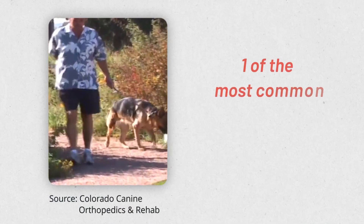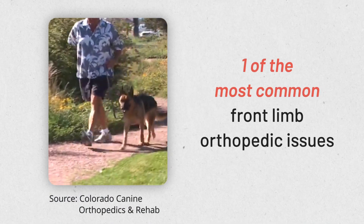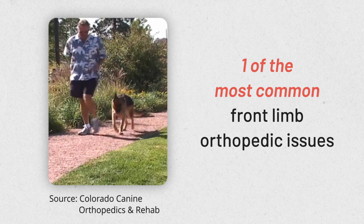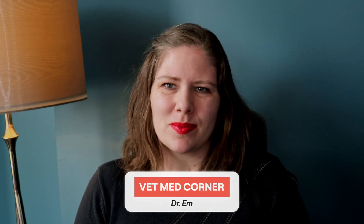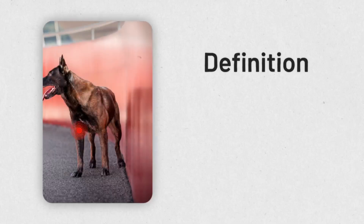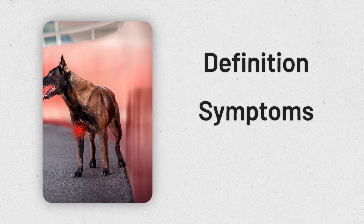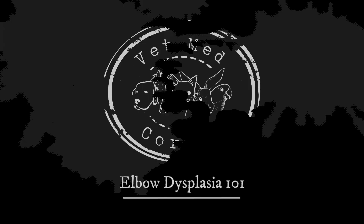Did you know that one of the most common front limb orthopedic issues in dogs starts developing before they're even a year of age? It's called elbow dysplasia. I'm Dr. M, welcome to VMC. Elbow dysplasia impacts thousands of dogs every single year, and in today's video we are going to cover what it is, what symptoms to watch for, how we treat it, and everything else that you need to know about elbow dysplasia.